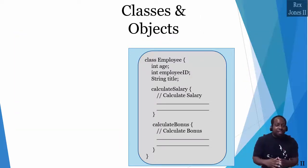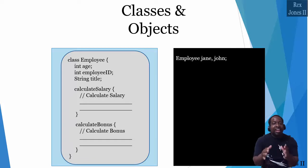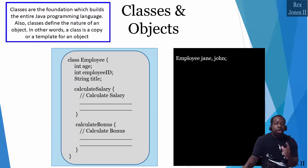Object-oriented programming was created to help developers deal with more and more challenges as the software application grew. The OOP concept deals with complex applications using classes and objects. Our class is employee, and our objects are Jane and John. Classes are the foundation which builds the entire Java programming language.